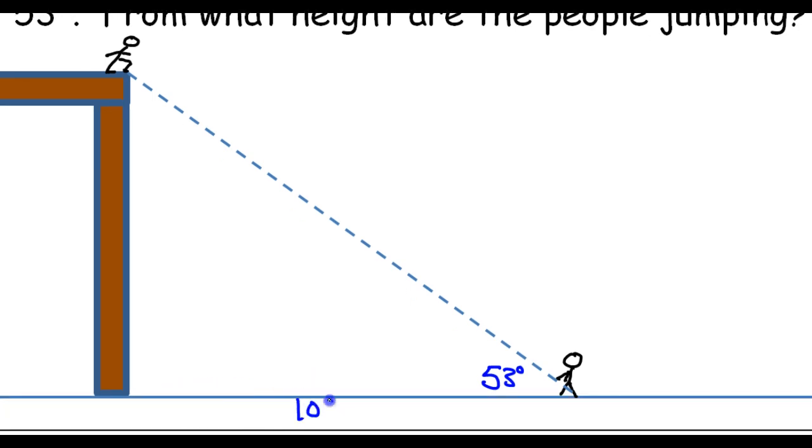So that means this angle down here is your 53 degrees. It says you're standing 100 feet from the base of the platform. So the 100 feet is this distance down here. 100 feet, from roughly from here to here. And we are being asked for the height from which people are jumping. So that's this.